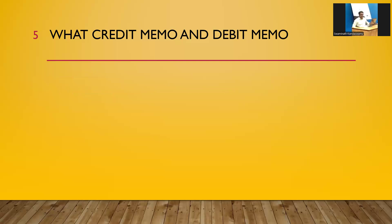Next: what is Credit Memo and Debit Memo? Credit Memo means the company has to give money back to the customer. Debit Memo means the customer has to give money back to the company. A scenario for Credit Memo: when the customer returns the material, we give money back. Another scenario: if we sold the material at a higher cost, we issue a Credit Memo. Debit Memo is the opposite — if we sold the material at a lower cost, the customer has to pay us more.